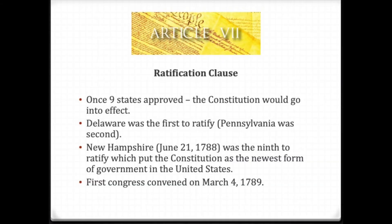Article 7 is a very brief article, known as the Ratification Clause. It basically states that the ratification of the conventions of nine states shall be sufficient for the establishment of this Constitution between the states. What this means is that once nine states approve, the Constitution becomes the new form of government. If you remember back at the Articles, it took 13 of 13 states to change — now we're saying nine of 13.